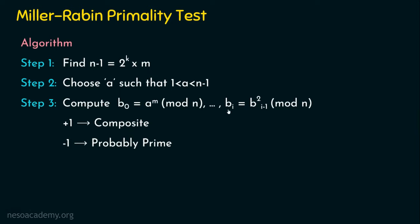In general, bi equals b(i-1) squared mod n. So for b1 it is b0 squared, for b2 it is b1 squared, for b3 it is b2 squared. We continue computing until we get either plus 1 or minus 1. When we see the example, you will easily understand.